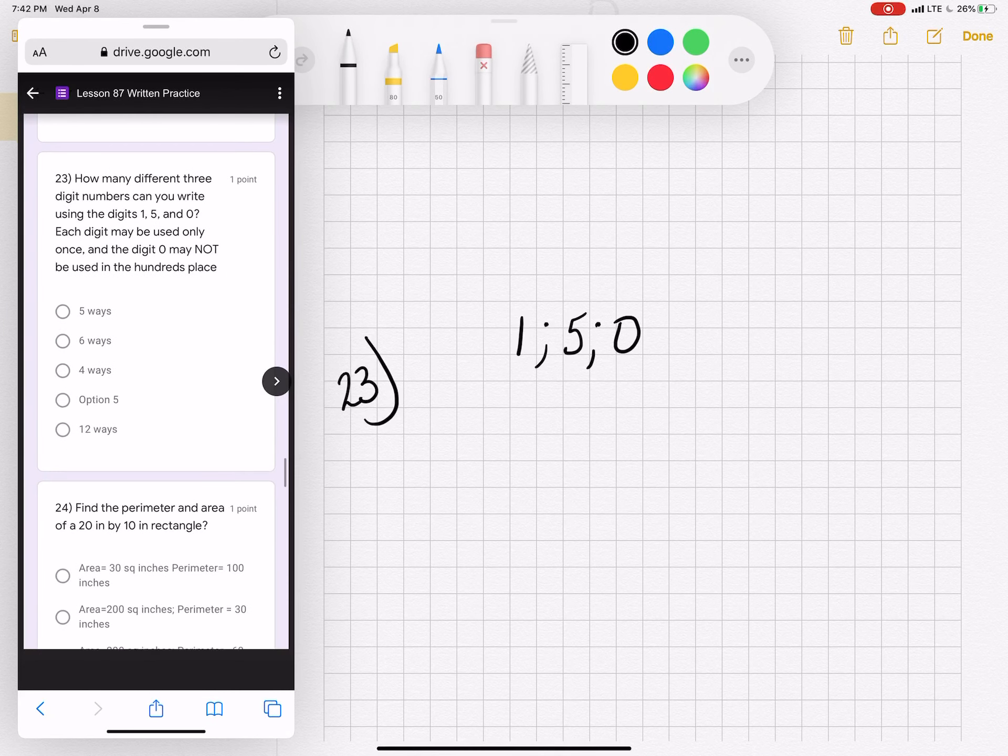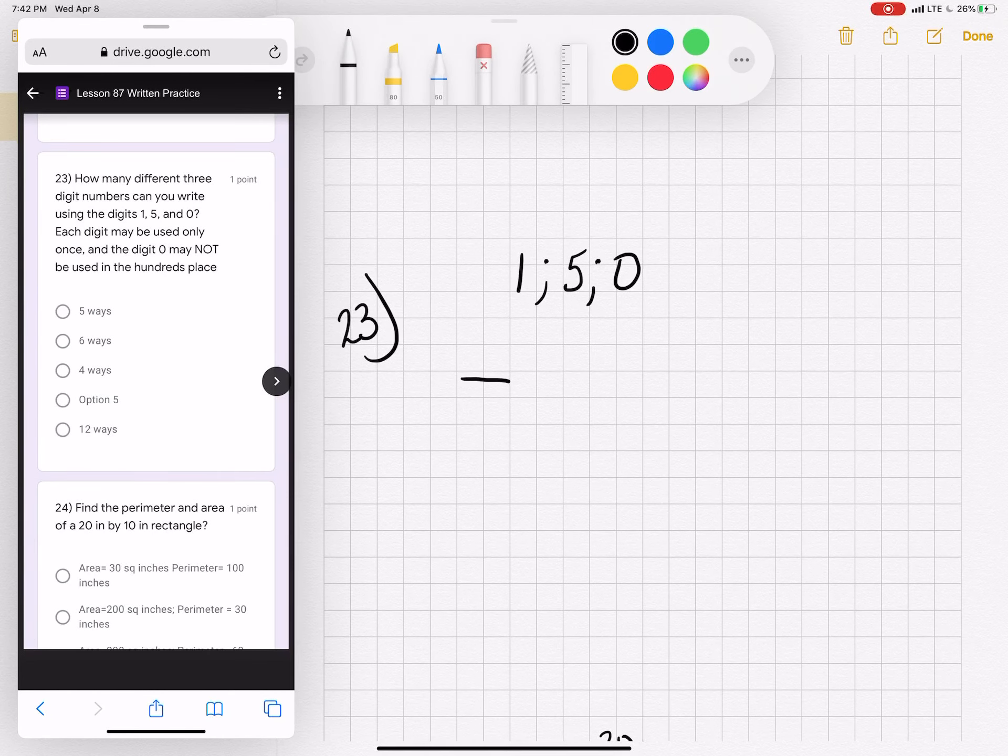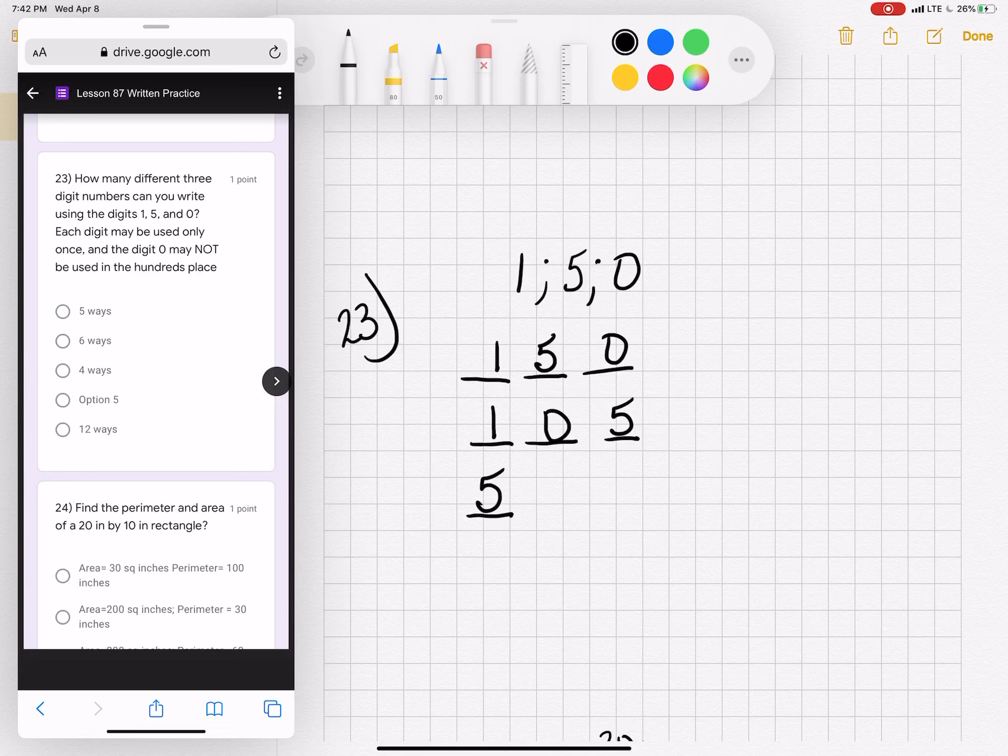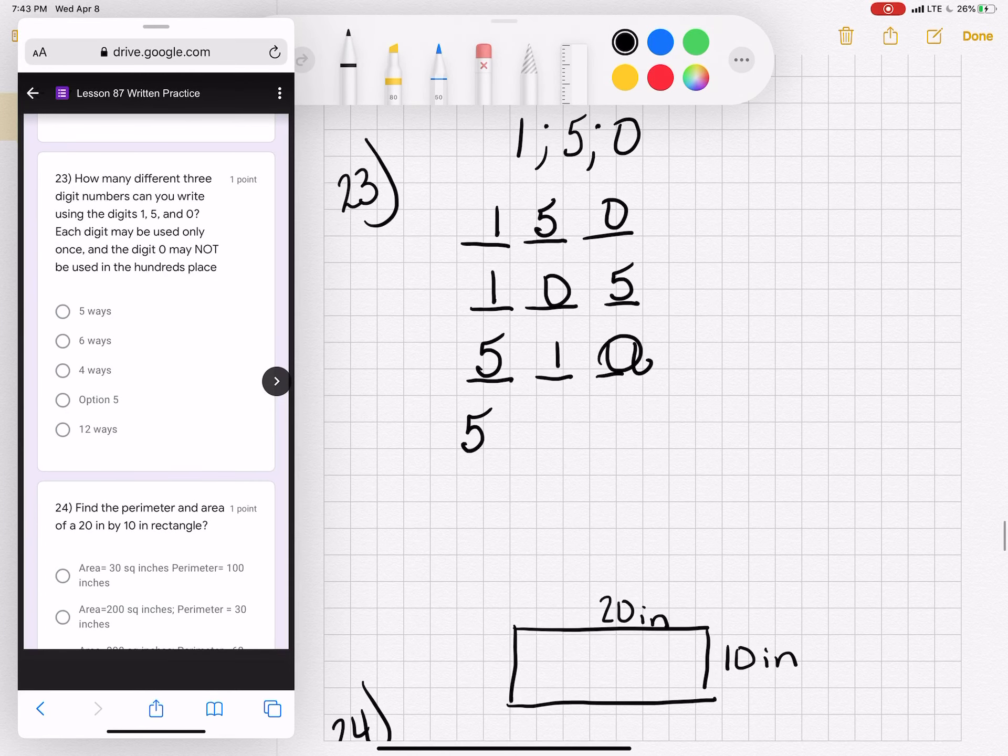Twenty-three. How many different three-digit numbers can you write using the digits one, five, and zero? Each digit may be used only once, and the digit zero may not be used in the hundreds place. So if you look at these three digits and you say, oh, that's a six-ways problem, that is not correct here. We're letting one go first. Then one, zero, five. Then five can go in the front. Five, one, zero. And then five gets another turn in the front. Five, zero, one. But there was one rule. Zero cannot go in the hundreds place. So these are the only three-digit numbers you can make, which means there are only four ways.